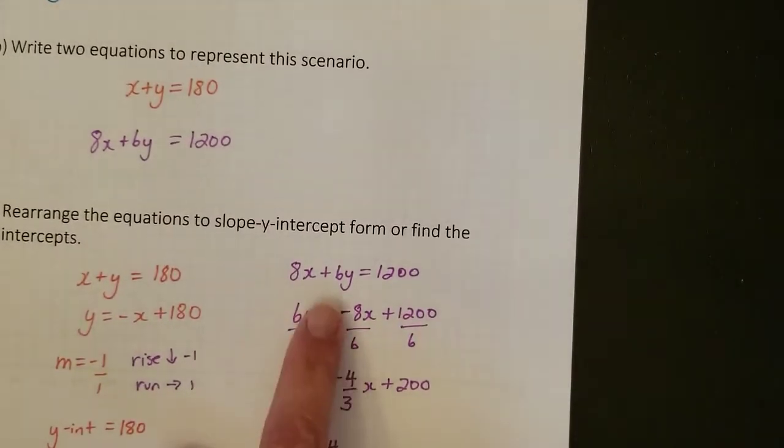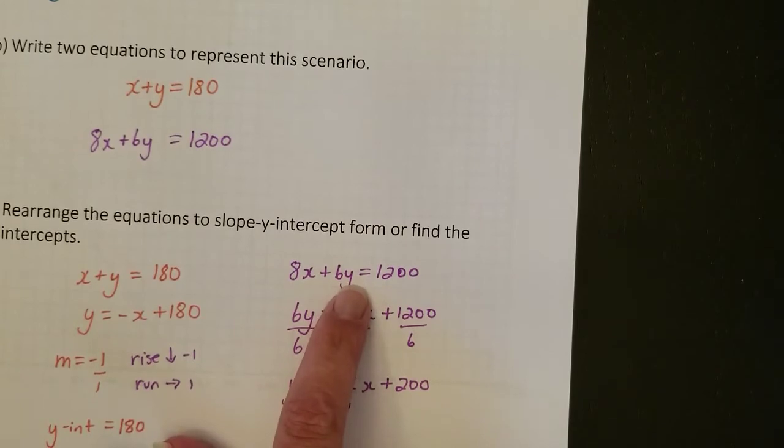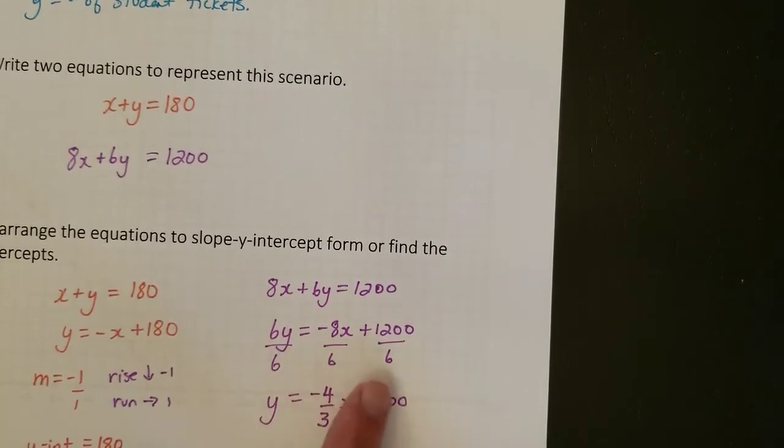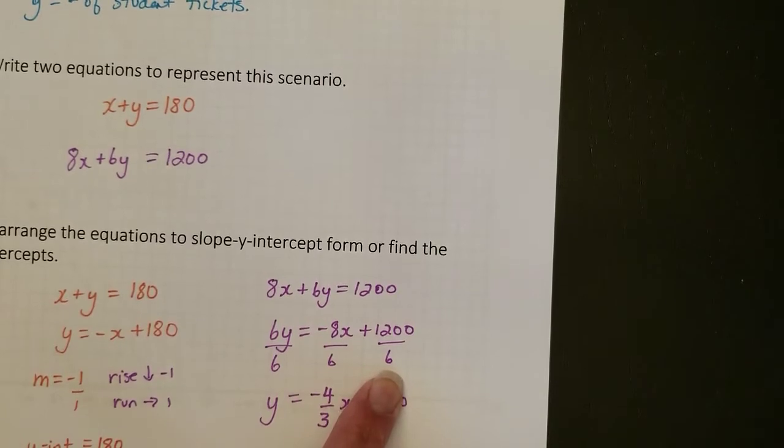This equation takes a bit more rearranging. I want to get Y by itself. That's the slope Y-intercept form, Y equals MX plus B. I'm going to bring the 8X over. So you see here, I have 6Y equals negative 8X plus 1200. And then to get Y by itself, I divide by 6 in each term.